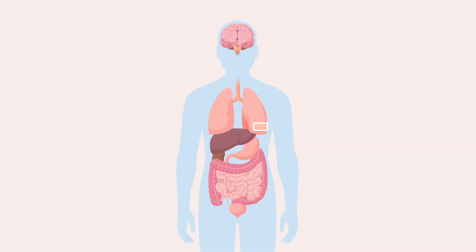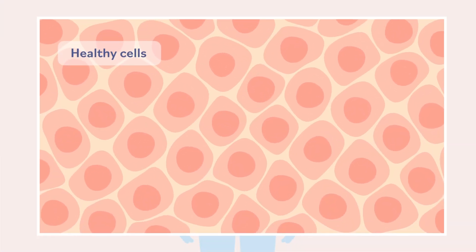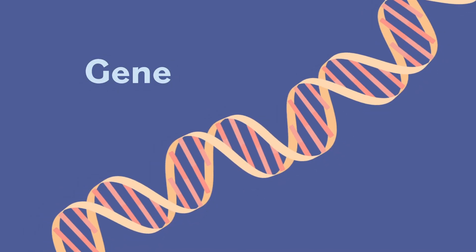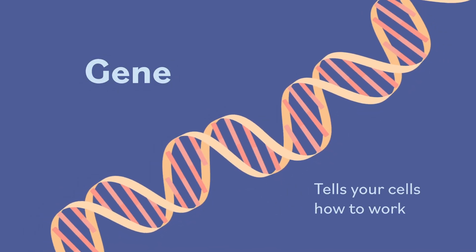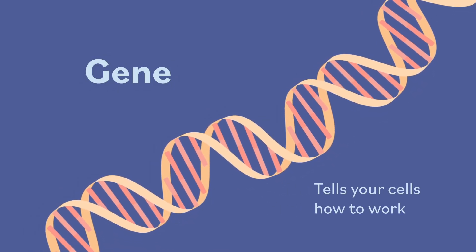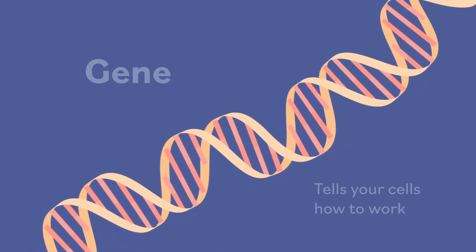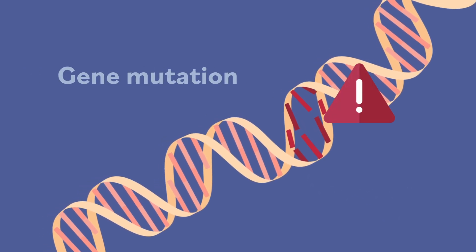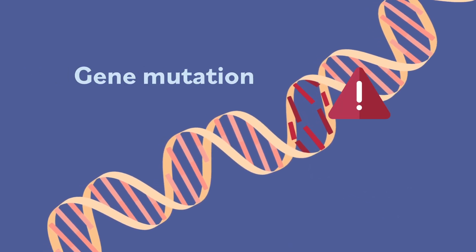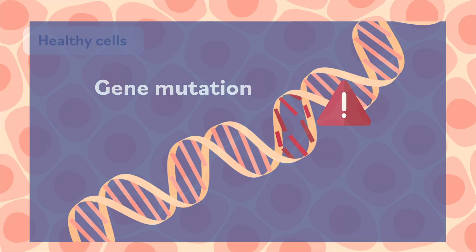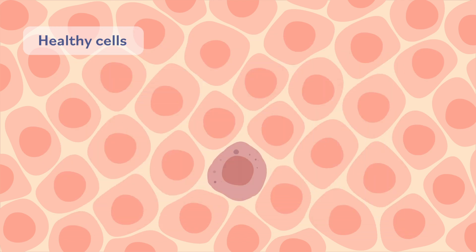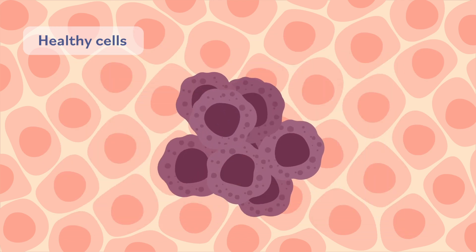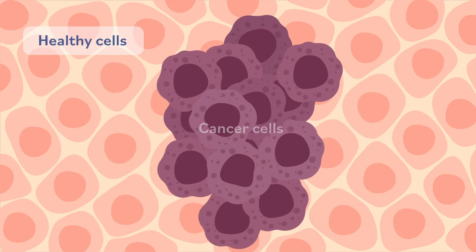Your body is made up of many many cells, and each cell contains a copy of your genes. Genes tell your cells how to work, including how to grow. Cancer is caused by damage to genes called gene mutations. Some gene mutations can cause cells to grow out of control, leading to cancer.